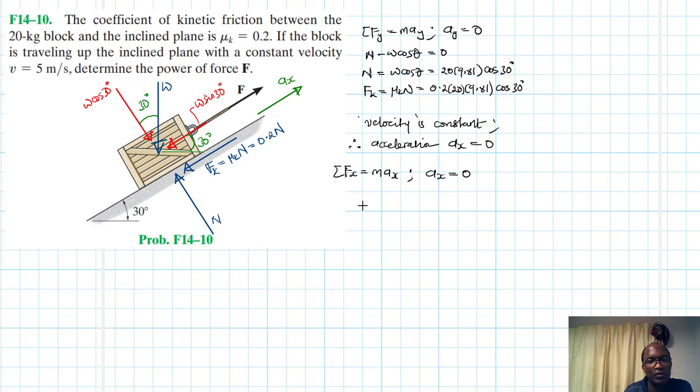So what do we have? We have F minus Fk minus W sin θ equal to 0. Therefore my F is just going to be equal to Fk plus W sin θ, and this is just equal to 0.2 by 20 by 9.81 cos 30 plus 20 by 9.81 sin 30.